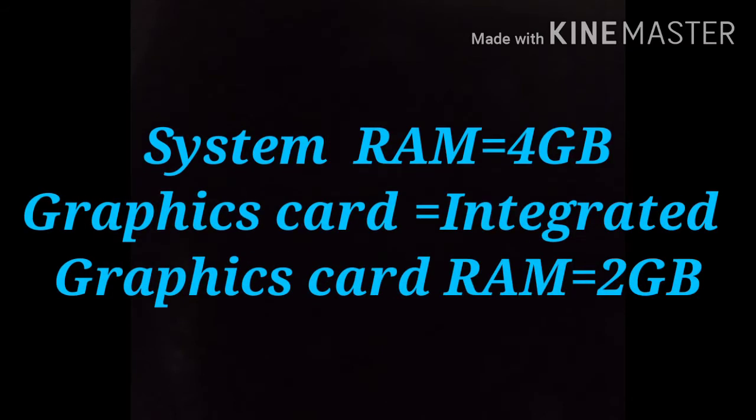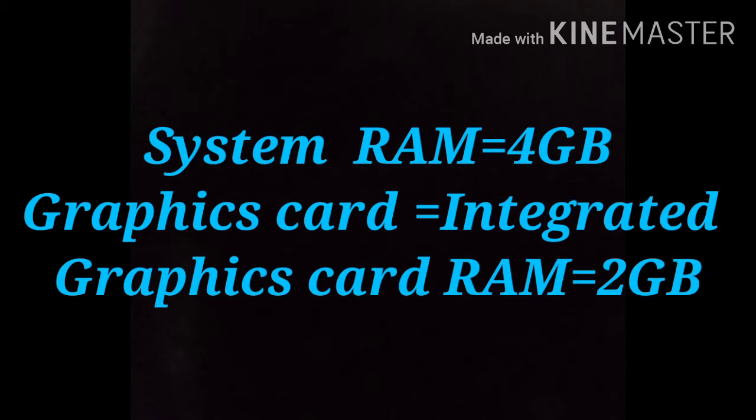For example, in another system where the system RAM is 4GB and the graphics card is integrated — integrated means it shares RAM — and the graphics card RAM is 2GB. In this case, the integrated graphics will share 2GB from the system's 4GB RAM. This is the difference between integrated and dedicated graphics cards.